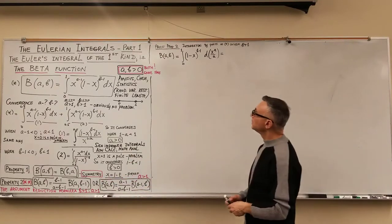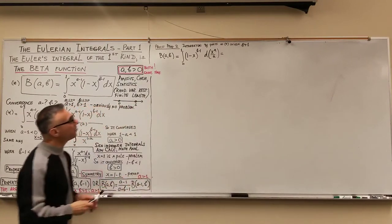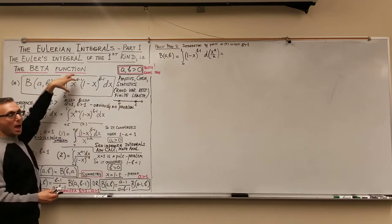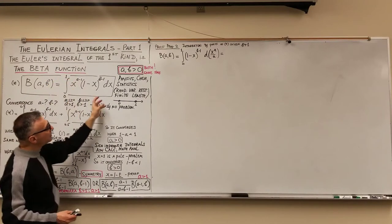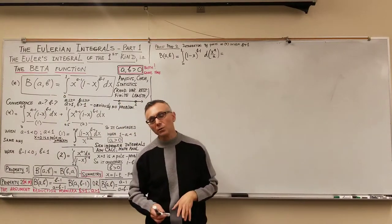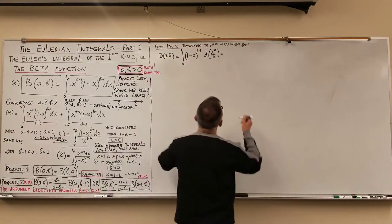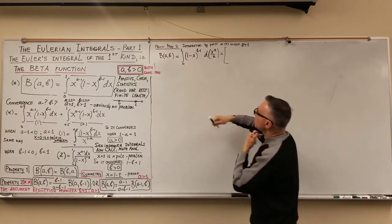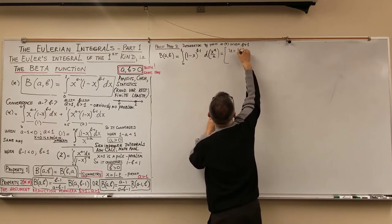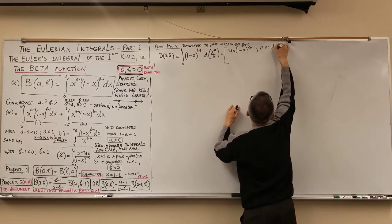Let's prove these using integration by parts. I rewrite the beta function as the integral from 0 to 1 of 1 minus x to the power b minus 1, and bring x to the power a minus 1 under the differential sign, so it becomes d of x to the a over a. Setting u equal to 1 minus x to the power b minus 1 and dv equal to d of x to the a over a.